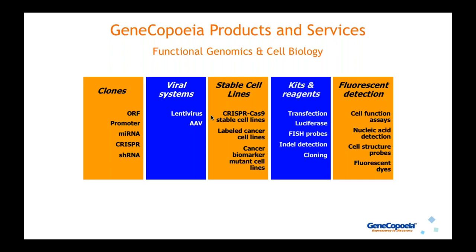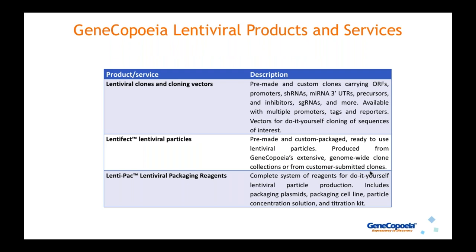We also have high-quality kits and reagents, mainly transfection reagents, luciferase assay kits for bioluminescence, FISH probes for genome editing or diagnostics, indel detection kits, and cloning kits. We have a large product line dedicated to fluorescent detection for cell function assays like apoptosis, nucleic acid detection reagents, cell structure probes for organelles, and fluorescent dyes. But of course, you're here to learn about lentivirus, so let's go ahead with that.